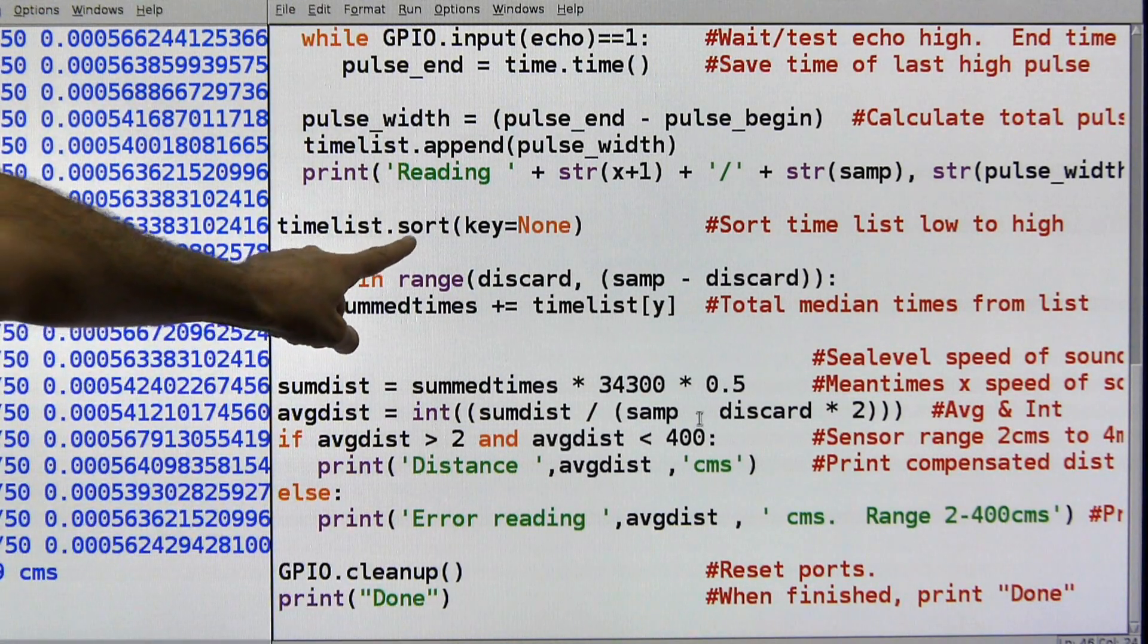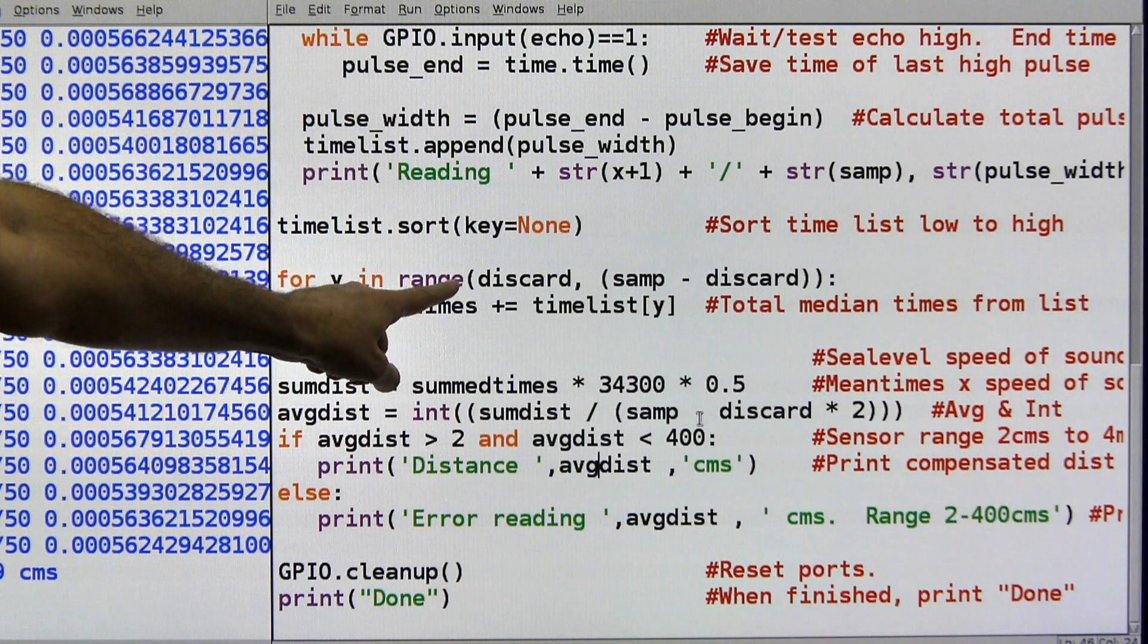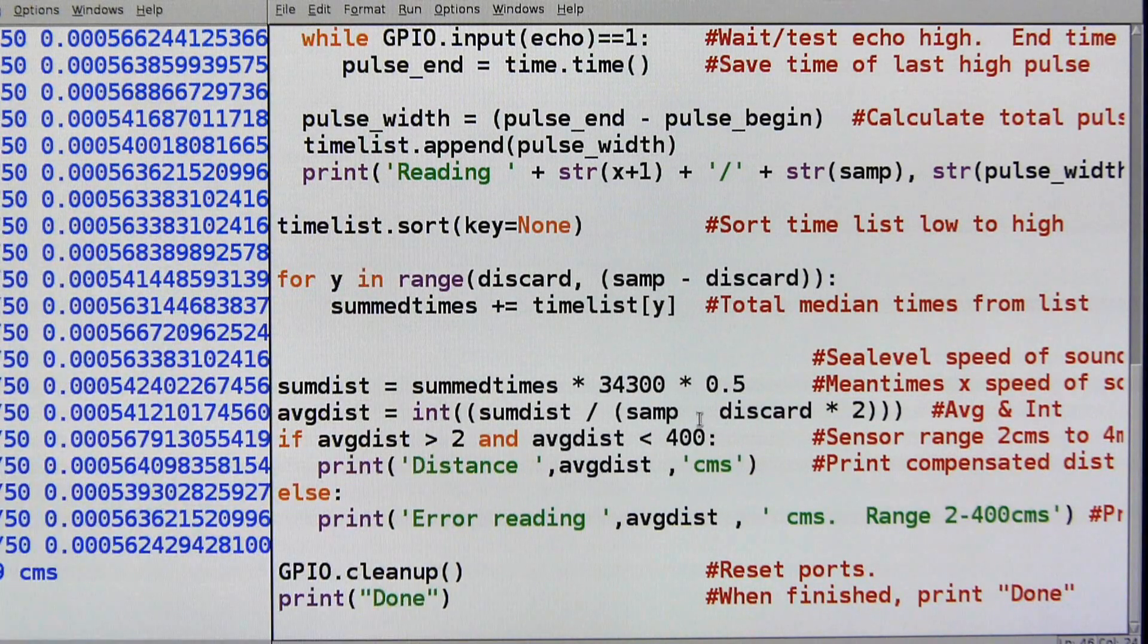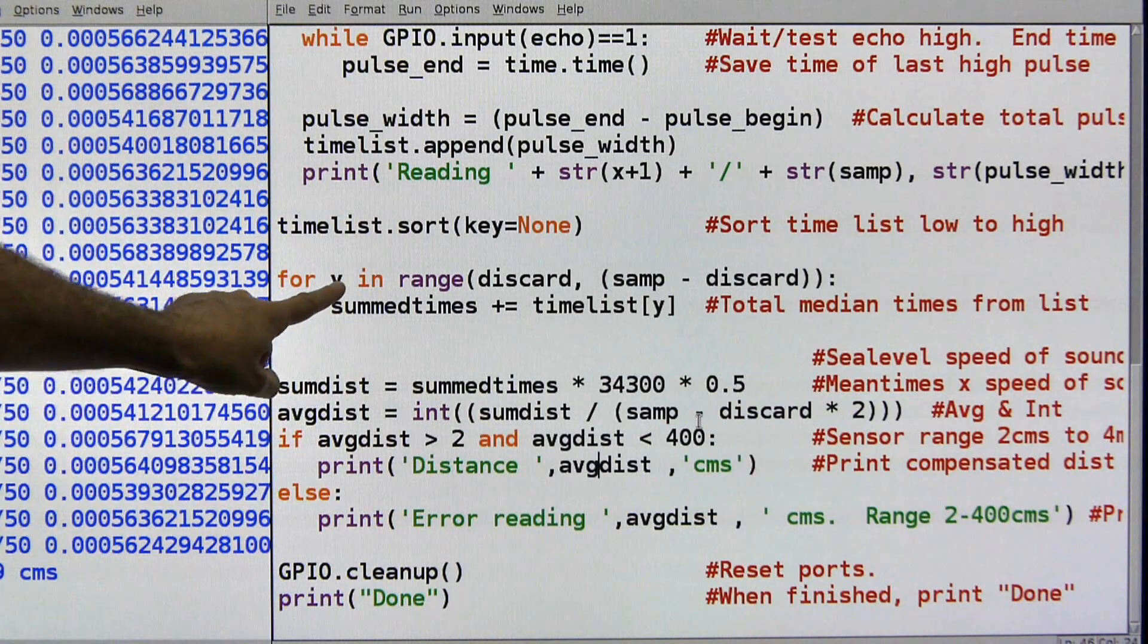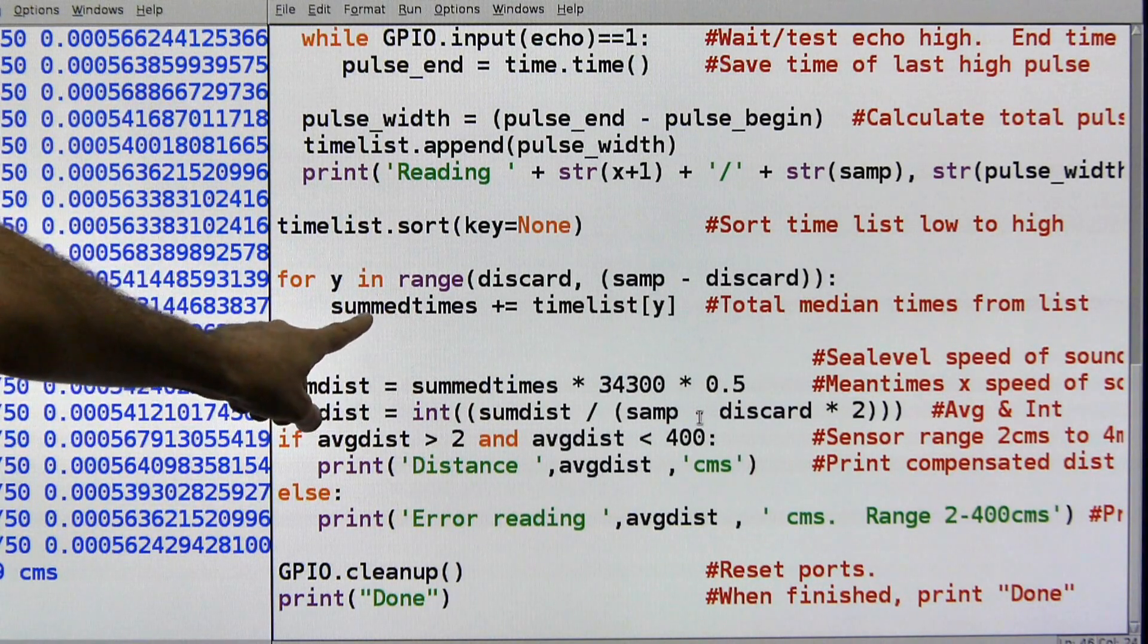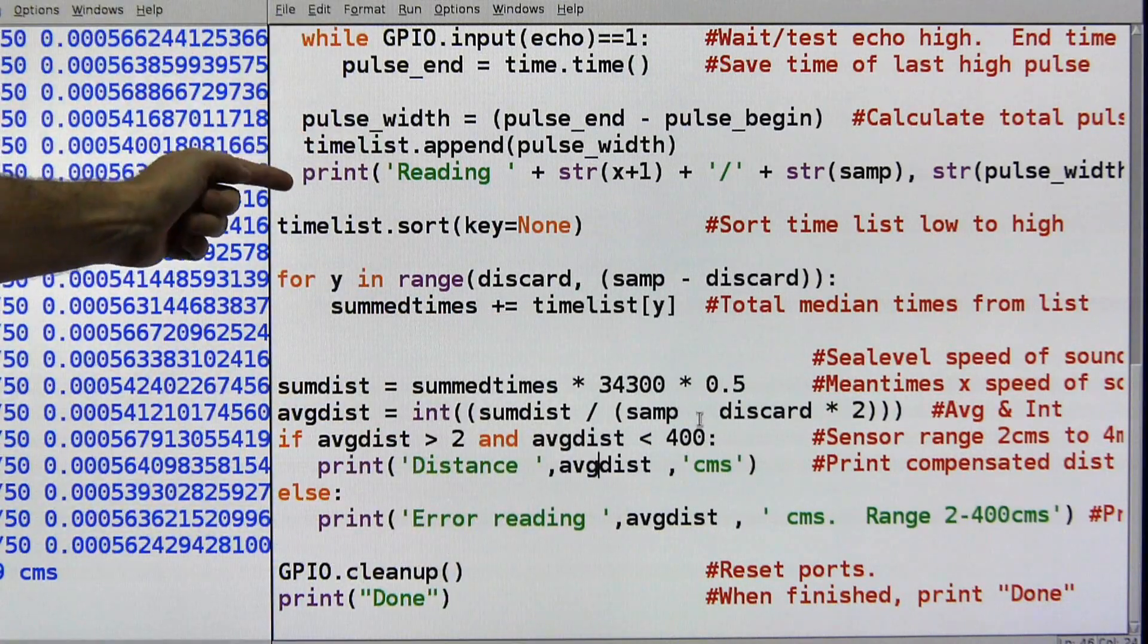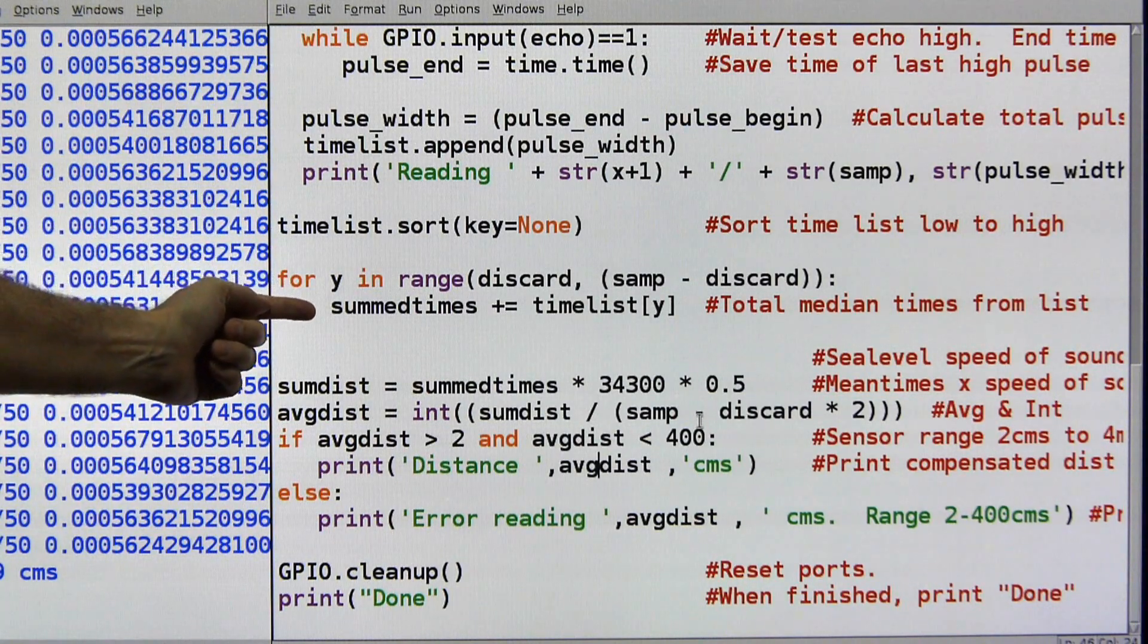Okay, then here I'm going to sort my list. Just to make it a lot easier, there's a function already to do this. You could write your own sort, but there's already a function to do it in Python. So I did that. It sorts it from low to high. And then here I'm going to sum up my times, sum up my median times from the list. So the loop is finished at this point, and I do my sort and then I'm going to sum up the times.